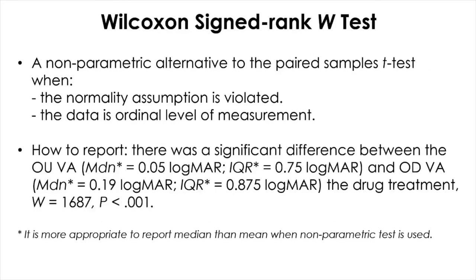The same applies for the Wilcoxon signed rank test. The W statistic shown in the sample write-up differs from the 83 I got earlier because I flipped the order of comparison — putting OD first then OU instead of OU first. The basic result is the same regardless. When using a non-parametric test, always report the median and IQR as your summary descriptive statistics.